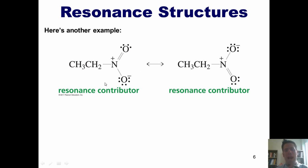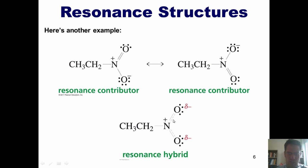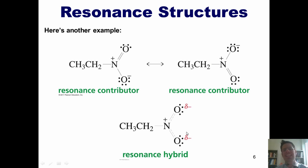In reality, this molecule exists somewhere in between. Thus, we could draw the real molecule with a dashed line between the nitrogen and each of these two oxygens, and a partial negative charge on each oxygen — indicating that the oxygens are collectively sharing the burden of that negative charge.